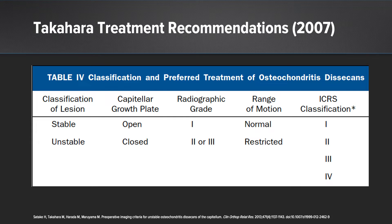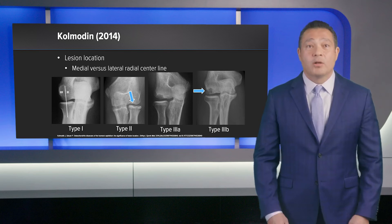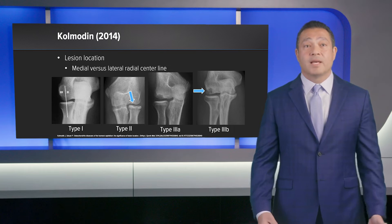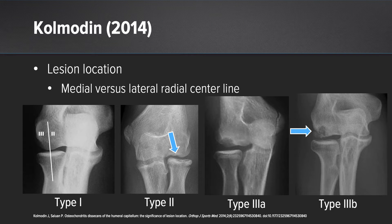Takahara first recommended treatment based on the stability of the lesion. He classified a stable lesion as a patient who had an open capitellar growth plate with only a grade one radiographic change, normal range of motion, and grade one ICRS. An unstable lesion was in patients who had a closed capitellar growth plate with grade two to three radiographic changes, higher ICRS grades, and restriction in range of motion. Kolmodin also emphasized lesion location as significant in both prognosis and outcome of OCD lesions.